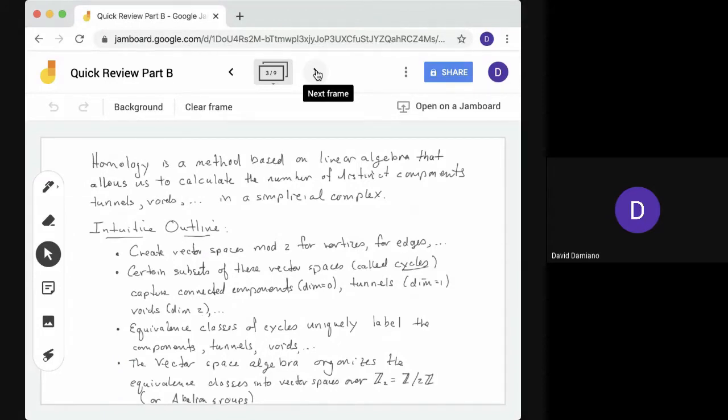So we're looking at homology. This is a method based on linear algebra. It allows us to calculate the number of distinct components, tunnels, and voids in a simplicial complex.